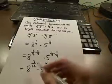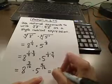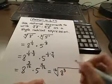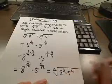Now that we have a common denominator, we can bring these back into radical form. This is the 12th root of 8 to the 3rd power and 5 to the 4th power.